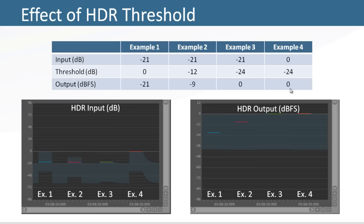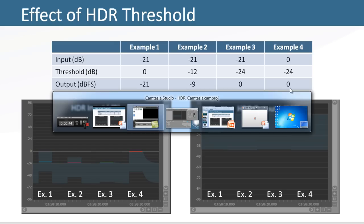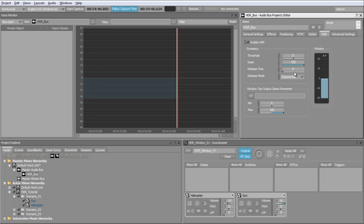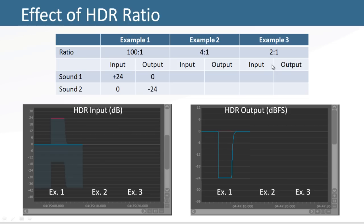The ratio parameter works very much like what is found on standard audio compressor and limiter effects. The following shows three examples using different ratio settings and compares the volume input and output of two sounds.